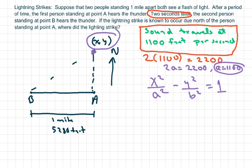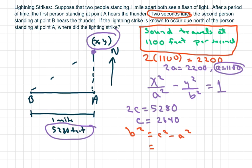And then we have 2C equals 5280, and I'm going by feet because they said this is one mile. So C equals half of that, which is 2640. And now we have to find B. We know that B squared equals C squared minus A squared. So that's going to equal 2640 squared minus 1100 squared. We're just going to leave it as B squared, so B squared equals 5,759,600.